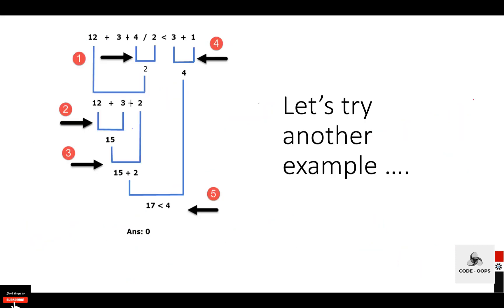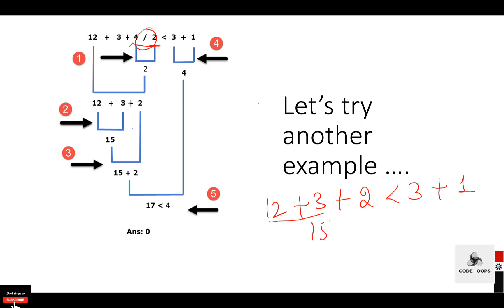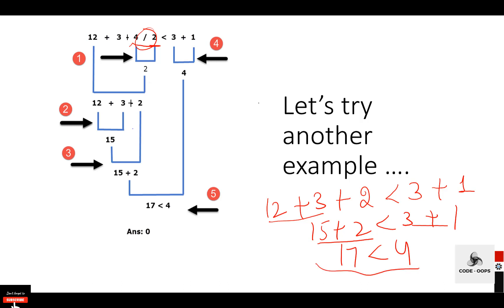In another example, the division operator has higher precedence than plus, so division is evaluated first: 4 / 2 = 2. The expression becomes 12 + 3 + 2. Then addition from left to right: 12 + 3 = 15, then 15 + 2 = 17. Then 3 + 1 = 4. Now 17 < 4 is evaluated as false, so the output is 0. A relational operator returns only true (1) or false (0).